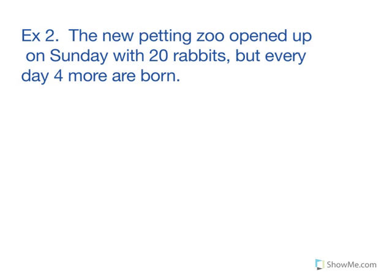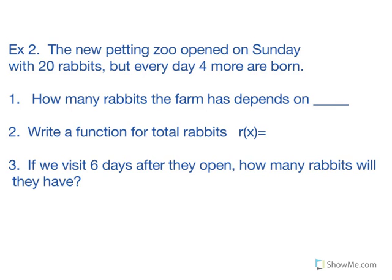Example two. The new petting zoo opened up on Sunday with twenty rabbits, but every day four more are born. So our questions are: how many rabbits the farm has depends on what? Number two: write a function for the total rabbits, call it r of x. That is, rabbits depends on x. And number three: if we visit six days after they open up the farm, how many rabbits will the petting zoo have? Please pause the video and try these now and then unpause when you're ready to move on.